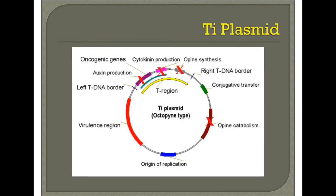We can modify the wild-type Ti plasmid into a disarmed form by deleting the auxin production, cytokinin production, and opine synthesis regions of the Ti plasmid. Opine catabolism genes are also not required and can be removed. The origin for replication and virulence region are retained. This is the resulting disarmed Ti plasmid structure.